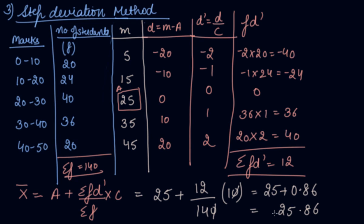So these were the three methods — direct method, shortcut method, and step deviation method — which we can use for solving continuous series. Your question may specify which method to use, so follow accordingly. I hope you liked our video. Do download our Scholar's Learning app and enjoy the learning experience with us.